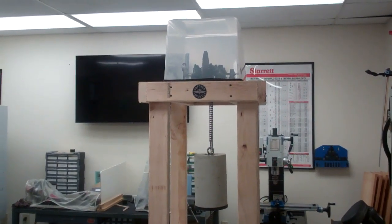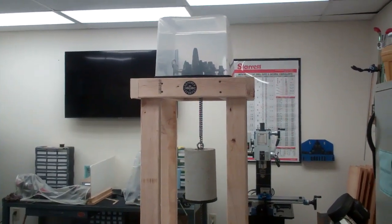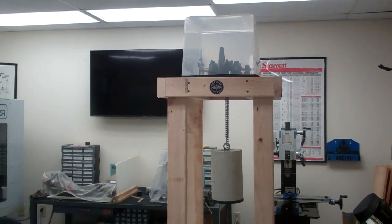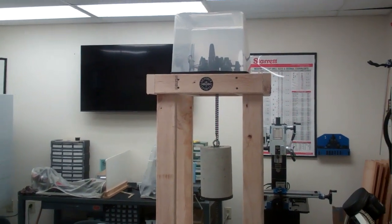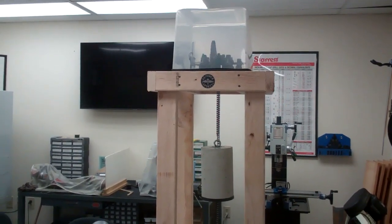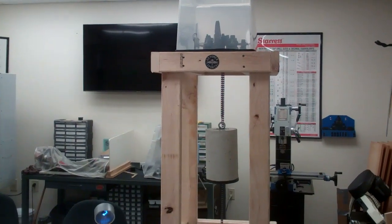Our second year engineering technology students were given the project to create a gravity light. So the gravity light generates electricity from the energy of a falling weight.